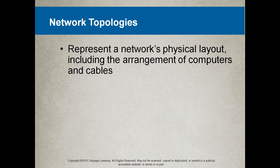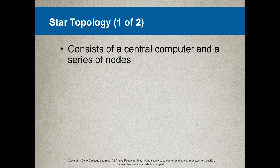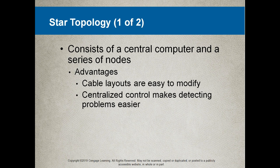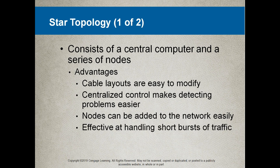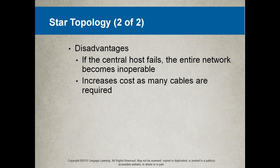Network topologies represent a network's physical layout including the arrangement of computers and cables. Common topologies include star, ring, bus, hierarchical, and mesh. The star topology consists of a central computer and a series of nodes. Advantages: cable layouts are easy to modify, centralized control makes it easier to detect problems, nodes can be added easily, and it is effective at handling short bursts of traffic. Disadvantages: if the central host fails the entire network becomes inoperable, and cost increases because many cables are required.